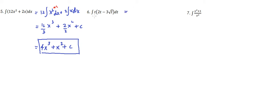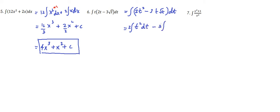Let's have number 6. We have the integral of t times the quantity 2t minus 3 square root of t, dt. We could use the product rule, but since I haven't discussed that yet, let's just multiply and simplify the term first. So we have the integral of t times 2t, which gives 2t squared, minus 3 times t times the square root of t, dt.